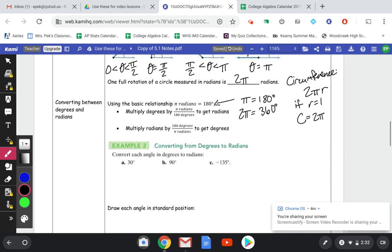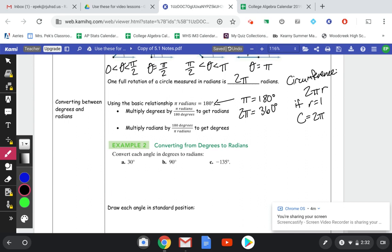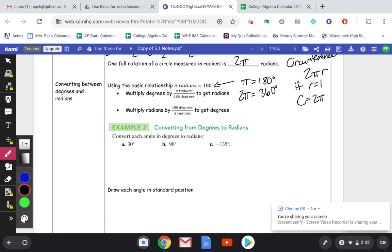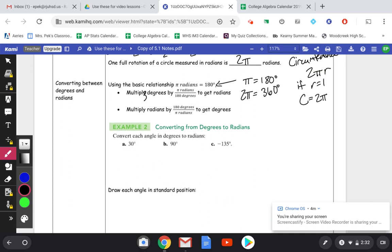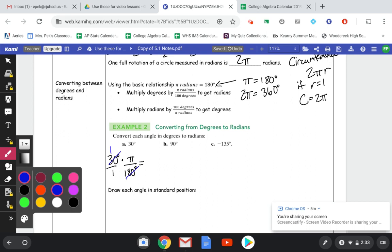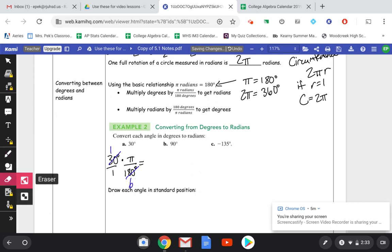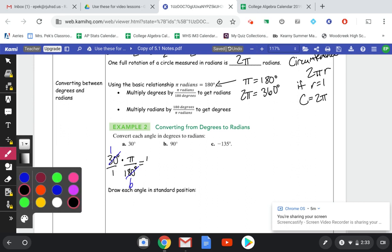So we're going to be starting here with converting from degrees to radians. Just like when we learn a new language, we need to learn how to translate between the language we speak and the new language we're learning. So here we have 30 degrees. You can take any angle in degrees and multiply it by pi over 180 degrees. So kind of in a sense, what we're doing is, we're canceling out the degrees. So we put degree on top, degree on bottom, so that the degrees cancel out. And then we just simplify 30 goes into 180 six times. So this is going to end up being pi over 6.